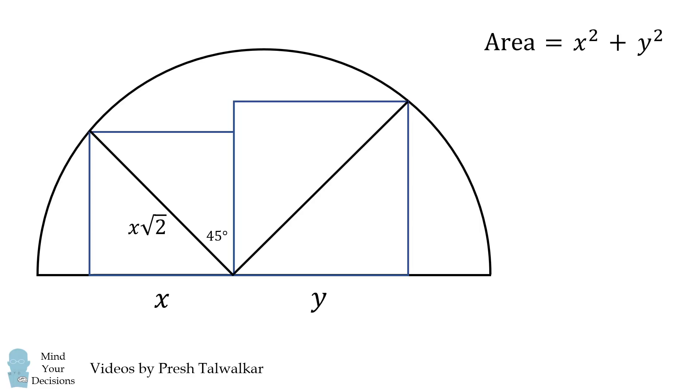Now draw the other diagonal. Its length will be equal to y times the square root of 2, and it will form a 45 degree angle right here. Thus, the two diagonals form a 90 degree right angle.